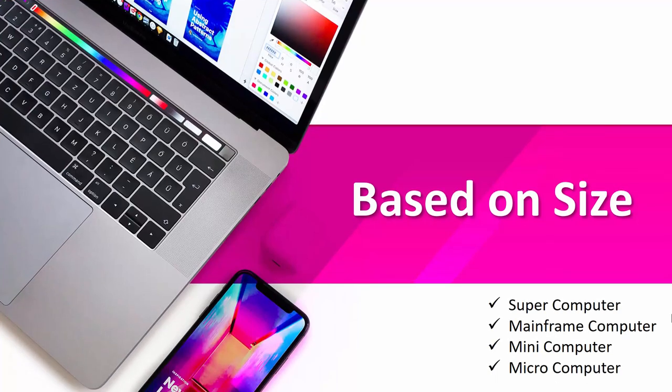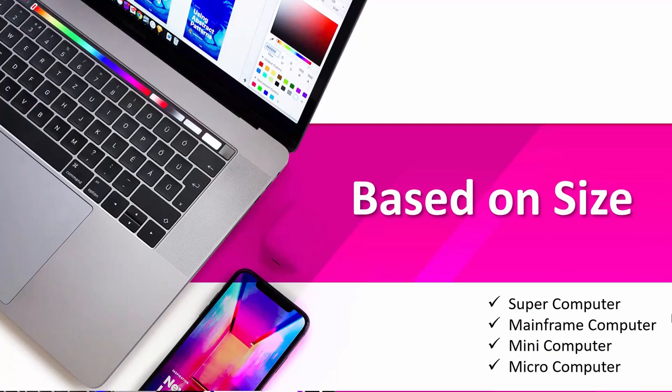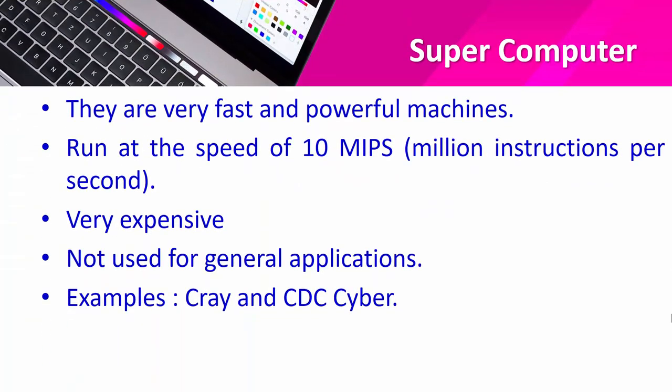Now let me explain the first type — computers based on size. The first one is supercomputer. Supercomputers are not portable; they are large in size but very fast and powerful machines. They run at the speed of 10 MIPS — 10 million instructions per second. They are very expensive and not used for general applications; they are generally used for scientific purposes.